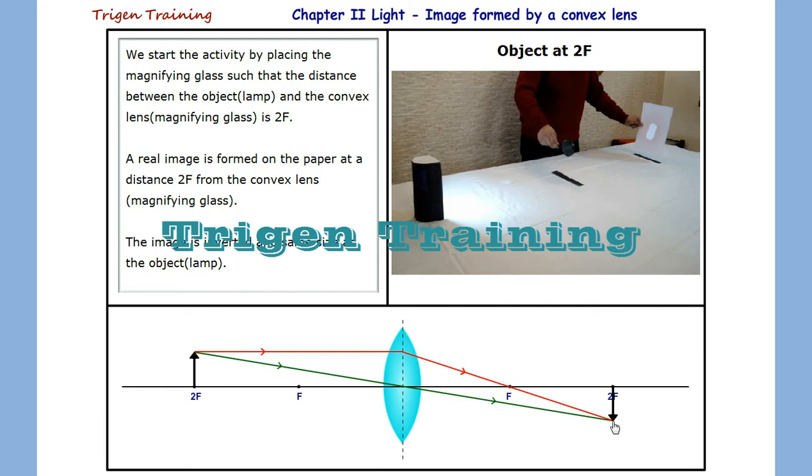The two rays meet at a point 2F after the lens. We see an image formed here which is the same size as the object but inverted. Exactly what we saw in our experiment.